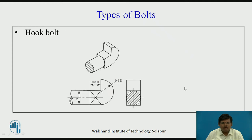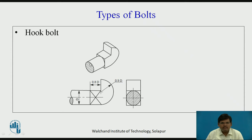The next type is hook bolt. When two surfaces are to be joined and one component doesn't have space to drill a hole in it, we go for a hook bolt. As you can see, it has a holding kind of shape at the part of the head. The lower part is inserted into one component while the other component is held with the help of this hook shape. The parametric dimensions are mentioned here.